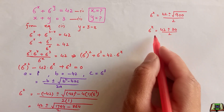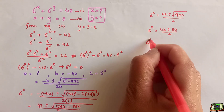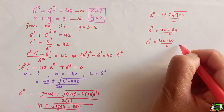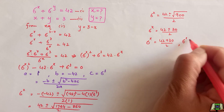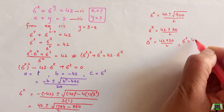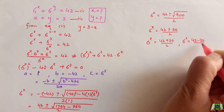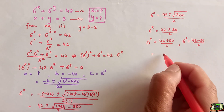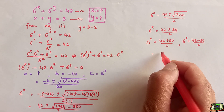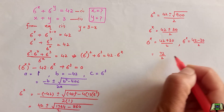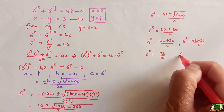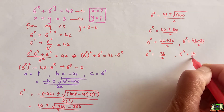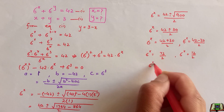So 6 to the power x equals 42 plus 30 divided by 2, and 6 to the power x equals 42 minus 30 divided by 2. Adding gives 72 divided by 2, and subtracting gives 12 divided by 2. So 6 to the power x equals 36, or 6 to the power x equals 6.